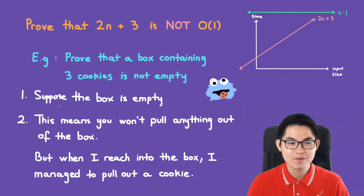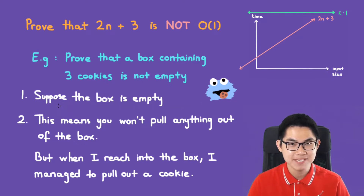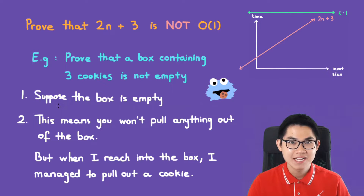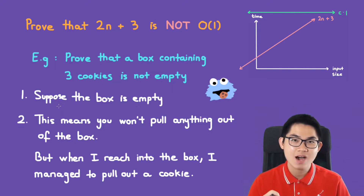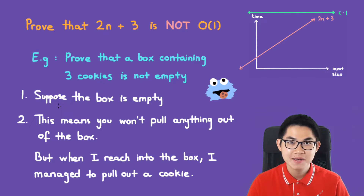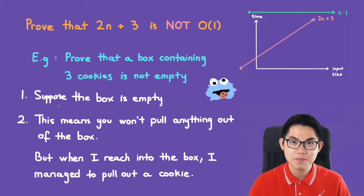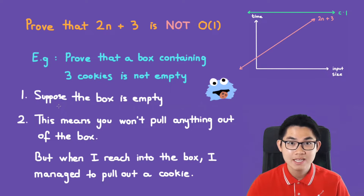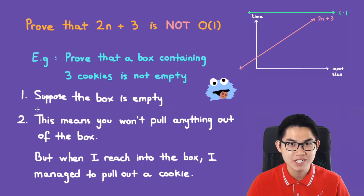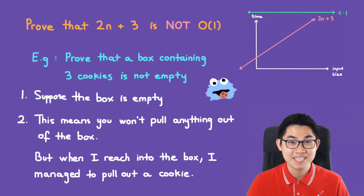For example: we want to prove that a box containing three cookies is not empty. Step one — negate the statement: suppose the box is empty. That would mean you can't pull anything out. But when I reach my hand in, I pull out a cookie — that contradicts our assumption. Therefore the box is not empty.